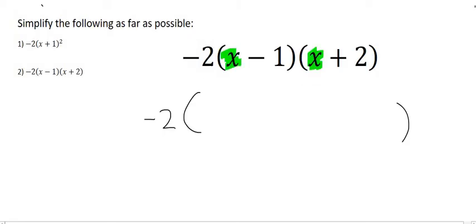So we'll start by multiplying x and x which is x squared. And then the x with the 2 which is going to be plus 2x. We've now used this x over here. So now the next step would be to use the minus 1 together with this x over here. And that's going to give us negative x. And then minus 1 times by 2 is negative 2.